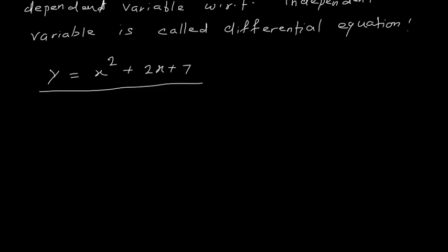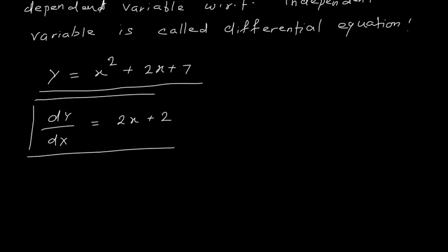When I find the derivative dy/dx, I get 2x + 2. This is an equation which involves the derivative of the dependent variable with respect to the independent variable, and it is called a differential equation. The concept is simple: an equation involving such a derivative is called a differential equation.